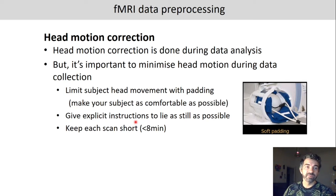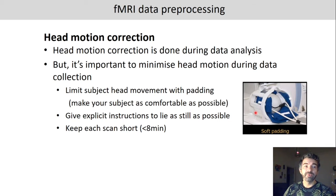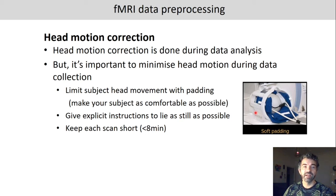One way to do this is to limit the subject's head movement with padding — a participant should be as comfortable as possible while lying in a position that restricts their ability to move around. Furthermore, it is important to give participants explicit instructions on how important it is to not move their head and to lie as still as possible. It also helps to keep the scan time short, because the less time they are in the scanner, the less they may feel like moving around.